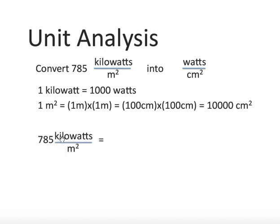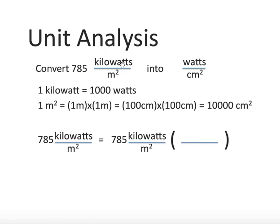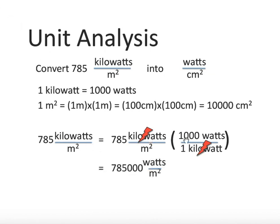We start with 785 kilowatts per meter squared and again use a fraction. The question is: do I write 1 kilowatt over 1,000 watts, or 1,000 watts over 1 kilowatt? Our goal is to convert kilowatts to watts, so we write 1,000 watts over 1 kilowatt. The kilowatts cancel, and we're left with 785 times 1,000, which is 785,000 watts per meter squared.